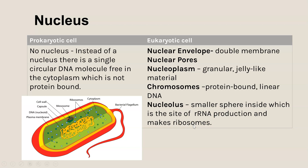In contrast, prokaryotic cells do not have a nucleus. Instead, they have circular DNA which is loose within the cytoplasm, and there are no histone proteins bound to it — so it is not membrane-bound.